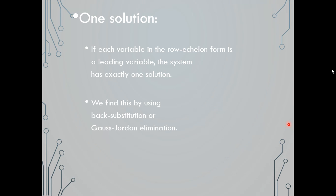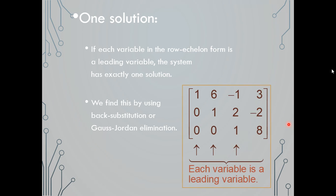We find this by using back substitution or Gauss-Jordan elimination, which we practiced a couple of days ago. For a one solution scenario, notice that at the bottom we have z equals 8. Since we have one solution, we can use either back substitution or continue making the numbers above a triangle of zeros to get the answer without back substitution.